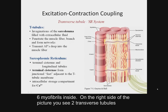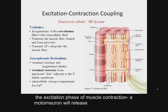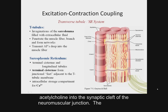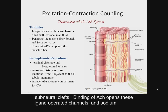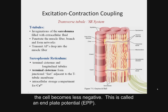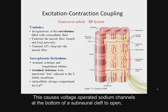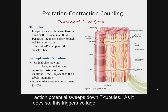Shown here is a single muscle cell with six myofibrils inside. On the right side, you see two transverse tubules surrounded by the terminal cisternae of the sarcoplasmic reticulum. During the excitation phase, a motor neuron releases acetylcholine into the synaptic cleft of the neuromuscular junction. The acetylcholine diffuses to acetylcholine receptors expressed on the muscle cell membrane at the top of subneural clefts. Binding of acetylcholine opens these ligand-operated channels, sodium diffuses into the cell, and the influx of positive charges means the inside of the cell becomes less negative — this is called an end plate potential. This causes voltage-operated sodium channels at the bottom of a subneural cleft to open, increasing the influx of sodium and leading to an action potential that sweeps down T-tubules.